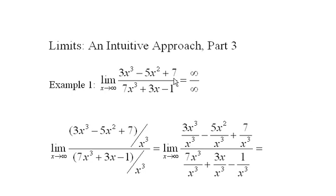Well, here we have a rational function, a polynomial over a polynomial, as x heads to infinity. And we run into the problem that the top grows without bound, and so does the bottom. In other words, we're going to the indeterminate form infinity over infinity.